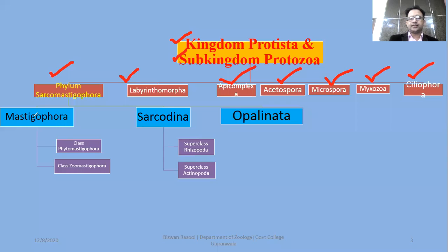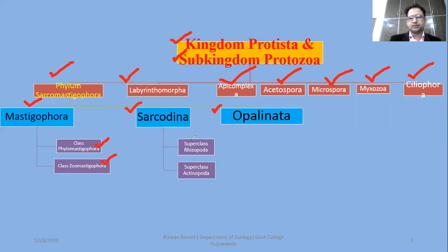All of the phyla are discussed. There are 3 subphyla: Sarcomastigophora, Sarcodina, and Opalinata. And then there are classes. Under Mastigophora we have Phytomastigophora and Zoomastigophora. In Sarcodina we will discuss Superclass Rhizopoda and Superclass Actinopoda. In Opalinata, no further class-level detail is mentioned.